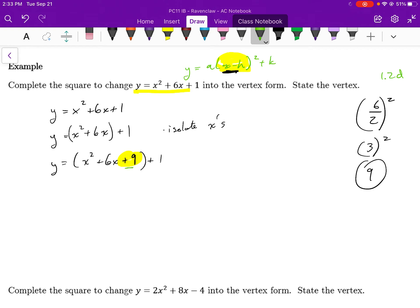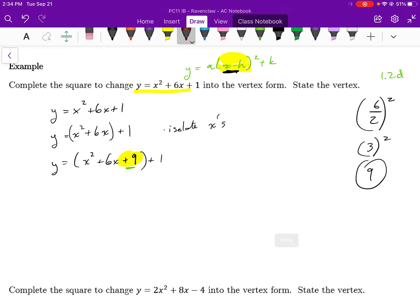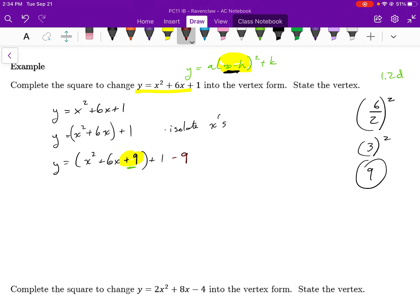Now, we have to make sure that when I add 9 to one side of the equation, I have to keep the equation in balance. We have several ways of doing that. I find the easiest way is to subtract 9 from the right-hand side.